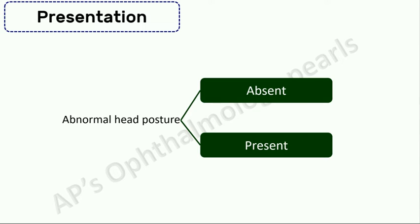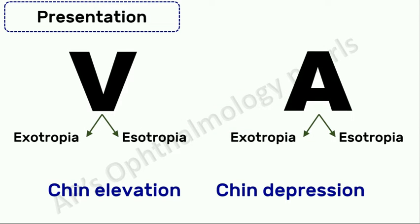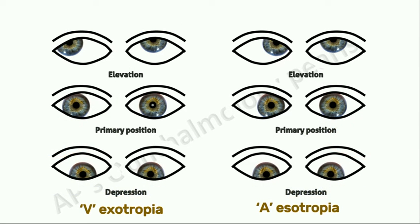Coming to the presentation: abnormal head posture is absent if the deviation does not allow fusion in any head position. If the deviation is small enough to allow fusion in either upgaze or downgaze, then a chin-up or chin-down position may be adopted. In a V-exotropia, the divergence is less in downgaze, and in A-esotropia there is less convergence in downgaze — closer to normal distance. So in order to simulate that position, the patient adopts a chin-up posture.